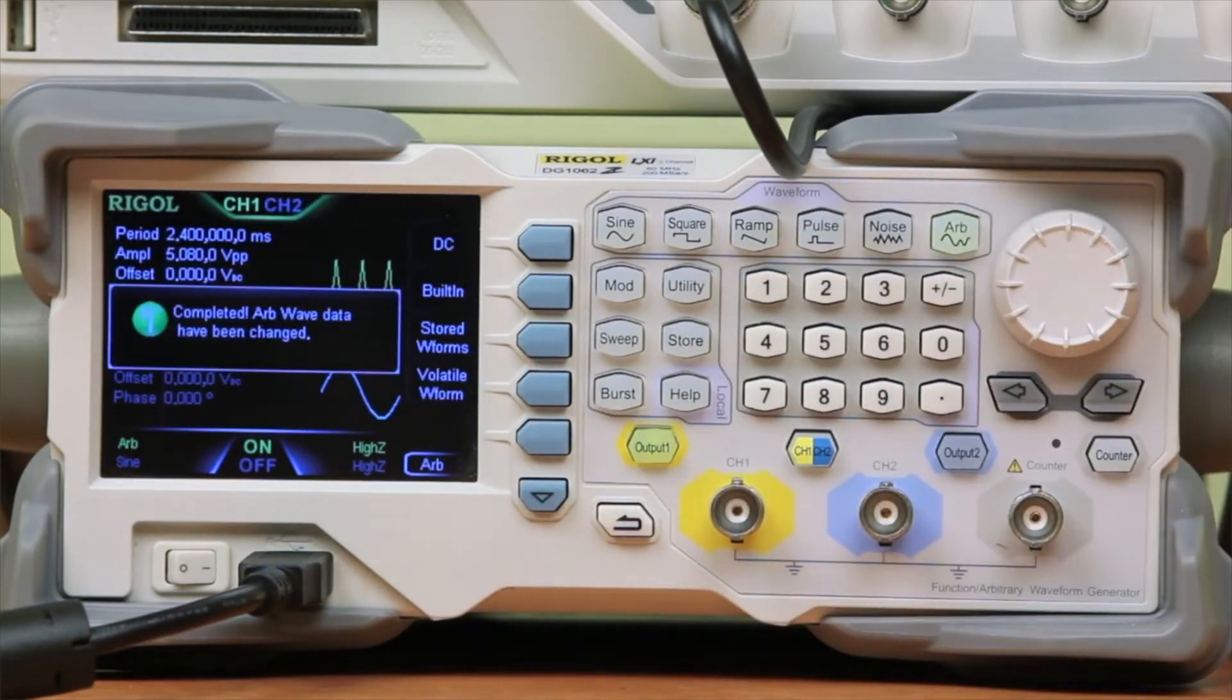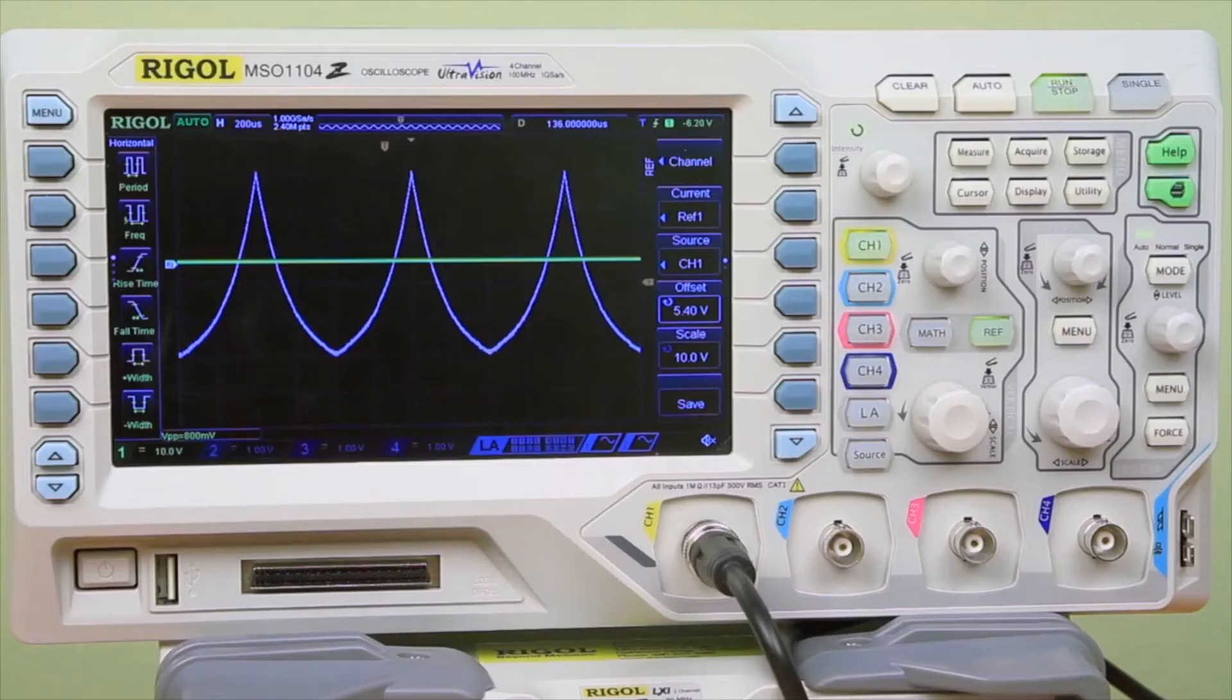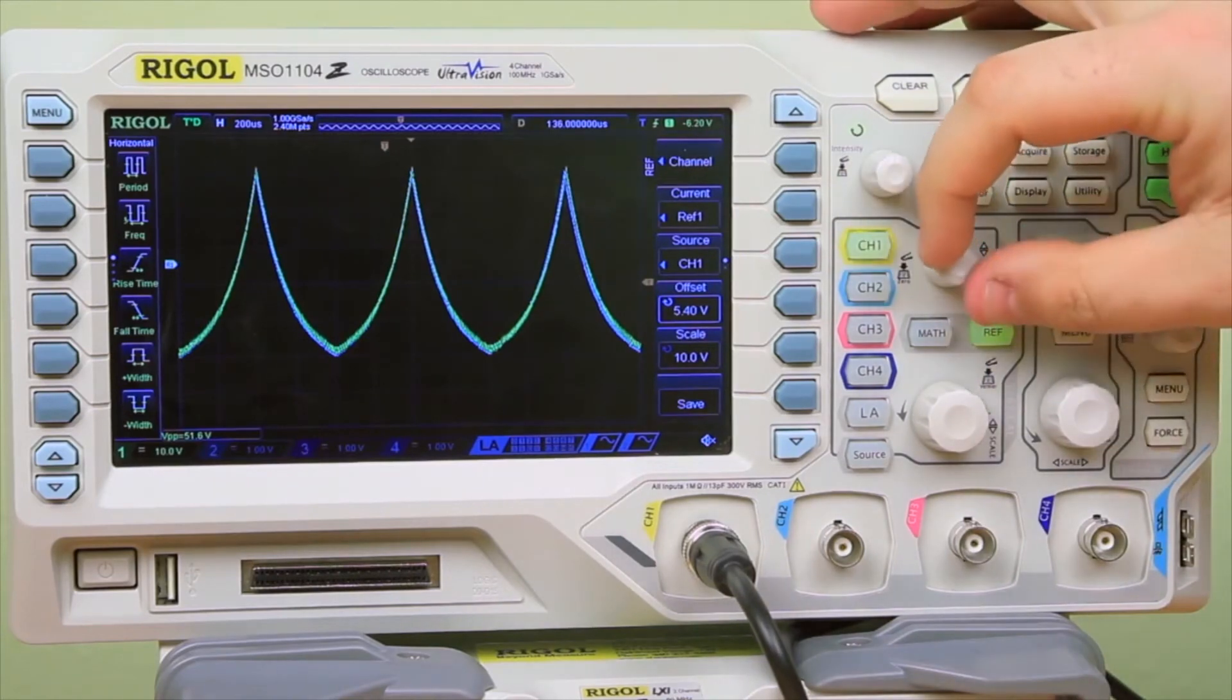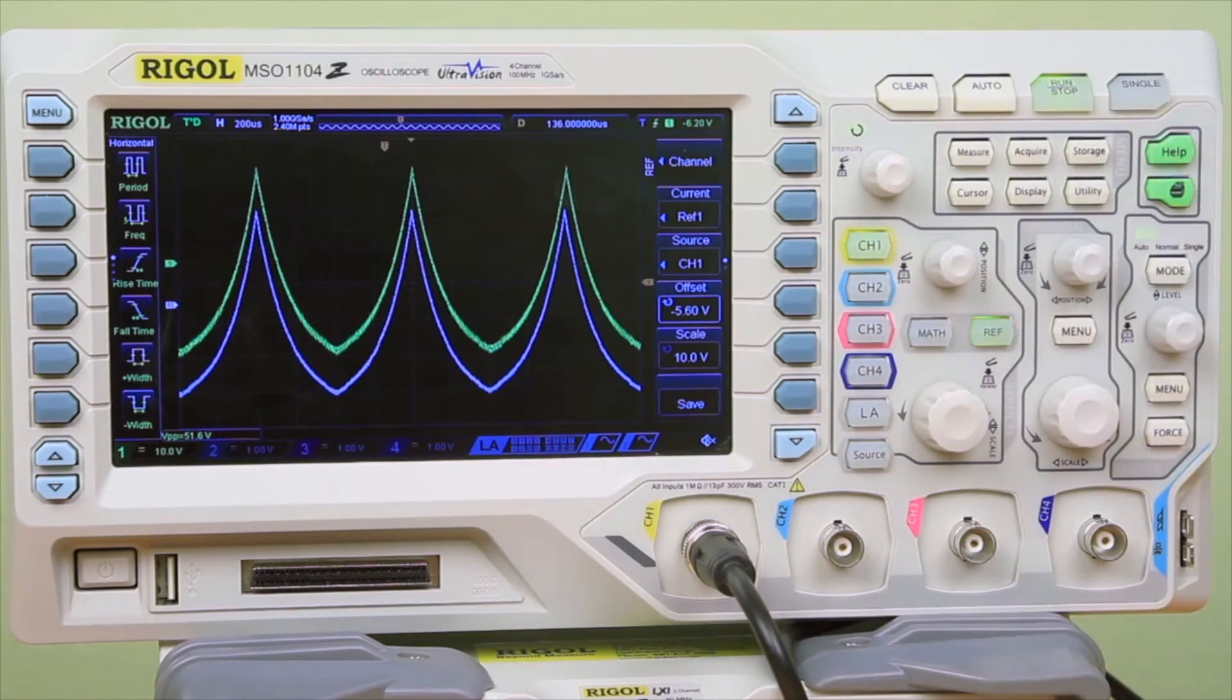Now I'm going to change over the BNC cable to the waveform generator. We can see on the scope that it's been reproduced, and I'll move the reference once again just to give you another sense of the two signals that were being captured.